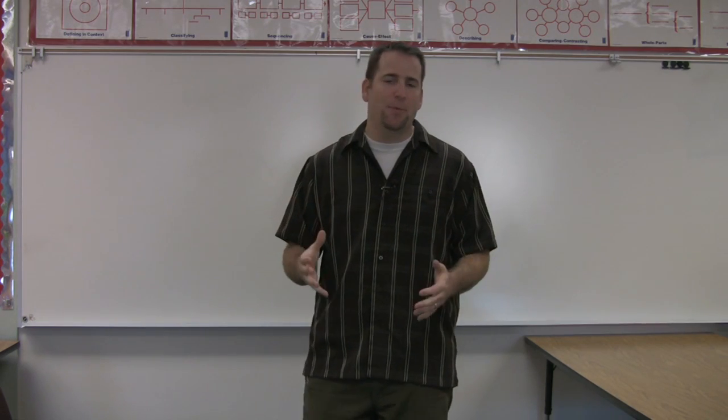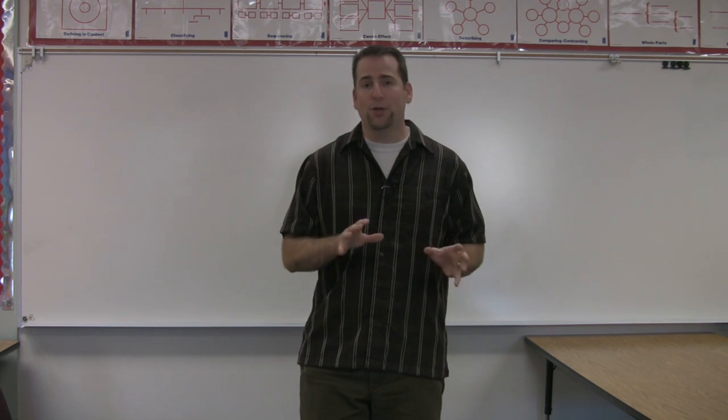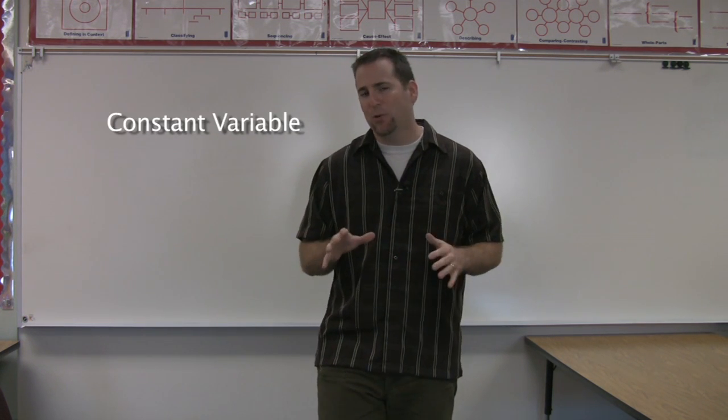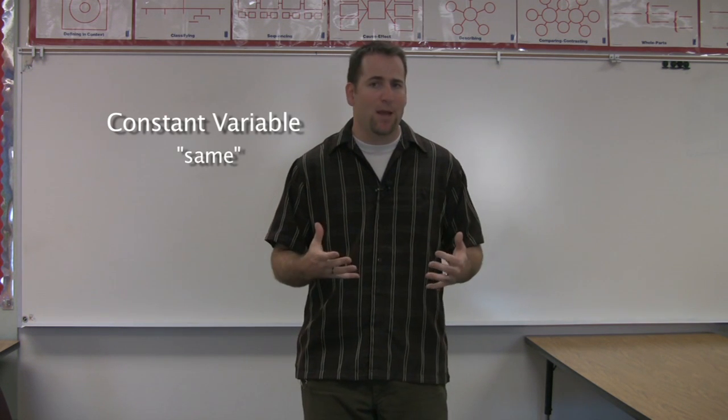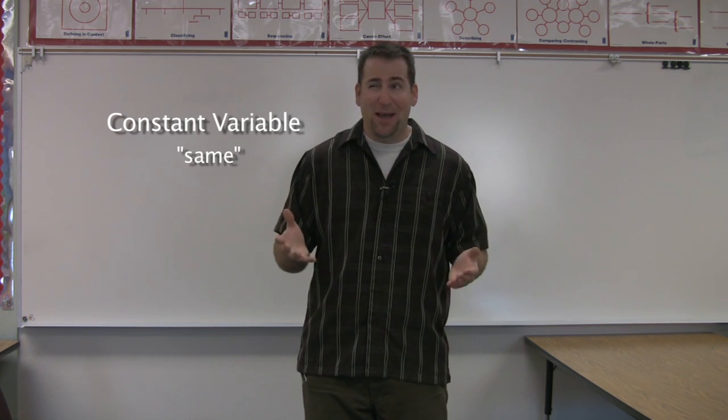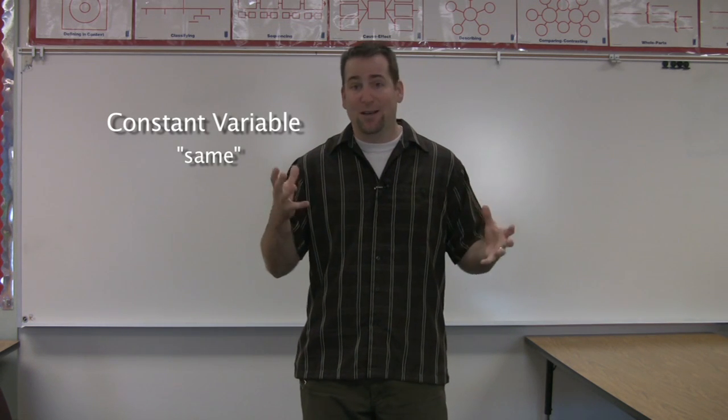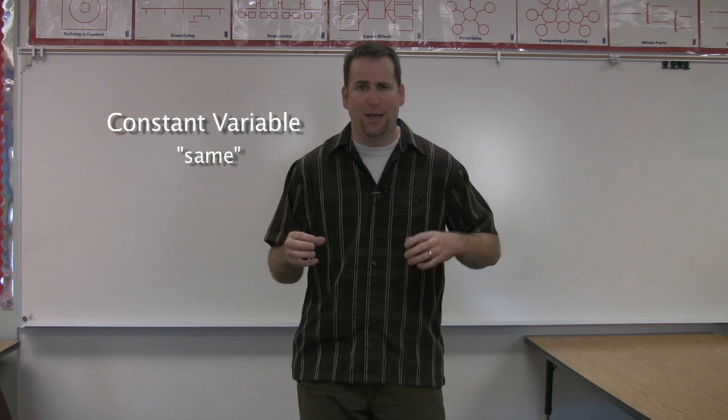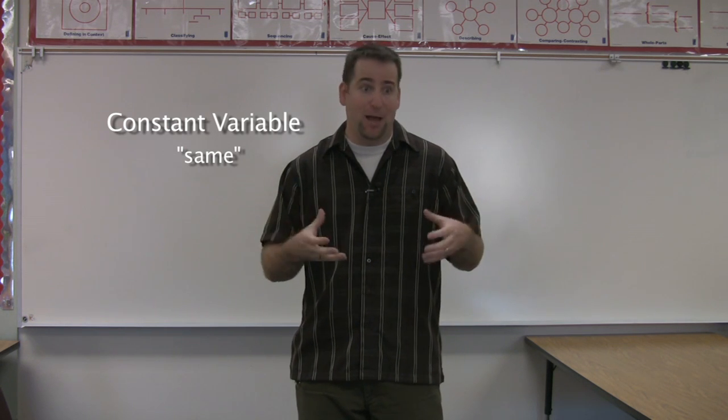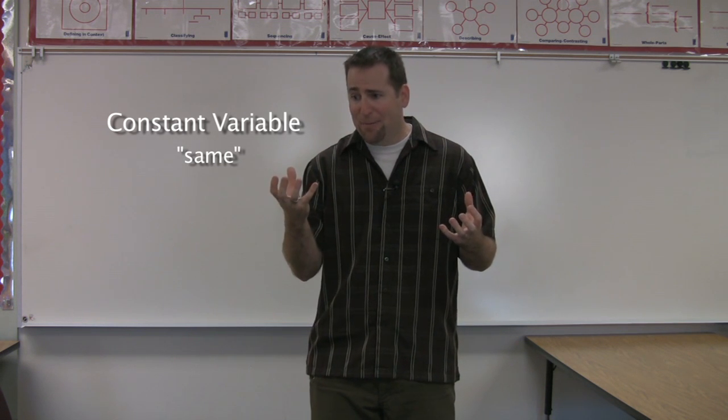Now there's one other kind of variable and it's sometimes overlooked, but without it we would not have a very fair test. That is called controlled variables or also known as constant variables. I like the word constant because when you say it, it means same. These are the variables that are not allowed to be different. In a way, it's kind of an oxymoron. An oxymoron is when you have two words that kind of contradict each other, like old and news. A constant variable kind of means to say, this is staying the same, but it's able to change.